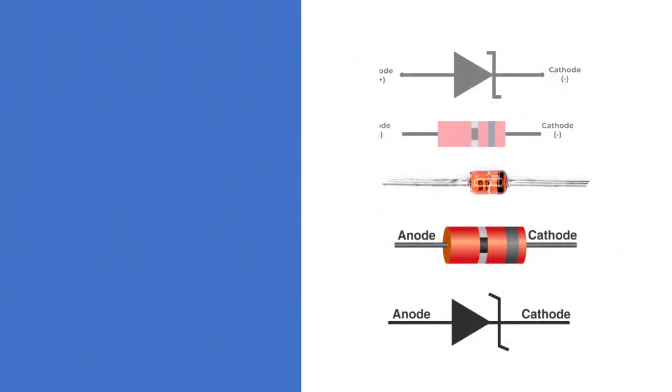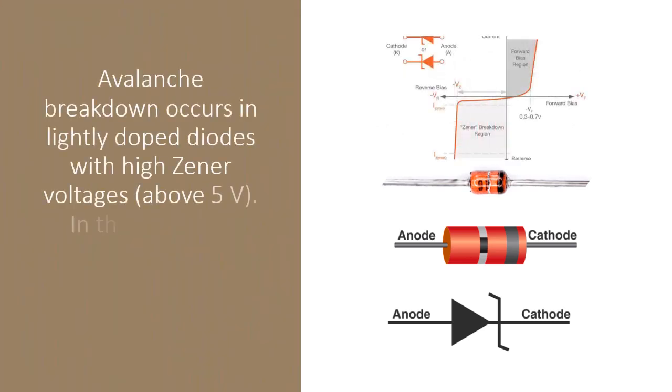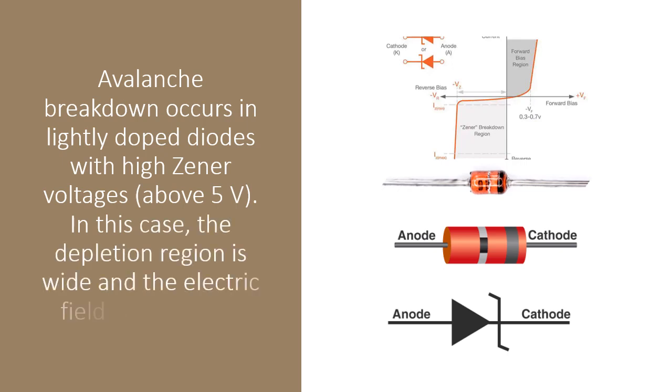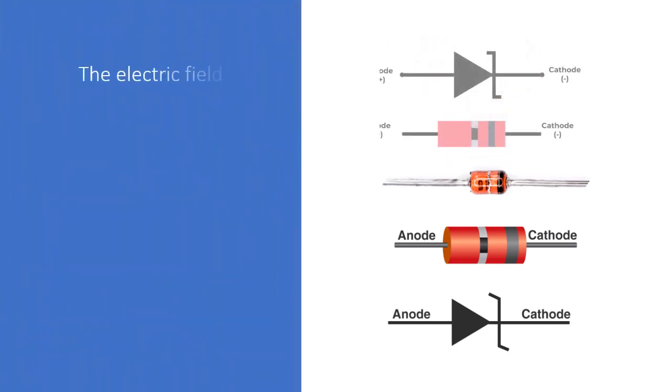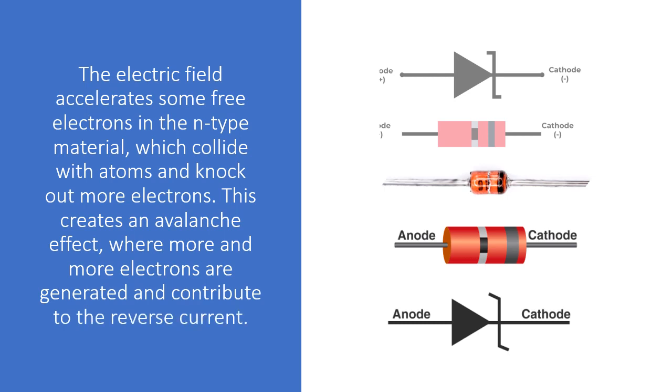Avalanche breakdown occurs in lightly doped diodes with high Zener voltages, above 5V. In this case, the depletion region is wide and the electric field is moderate. The electric field accelerates some free electrons in the N-type material, which collide with atoms and knock out more electrons. This creates an avalanche effect, where more and more electrons are generated and contribute to the reverse current.